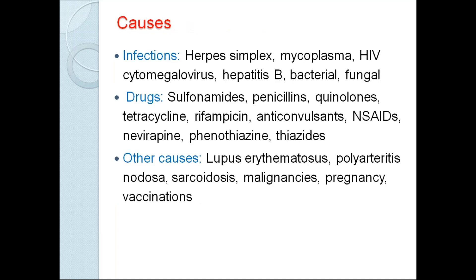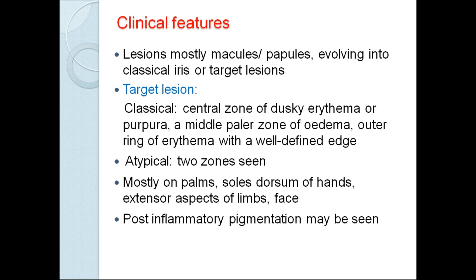Causes of erythema multiforme: most common are infections like recurrent herpes simplex, mycoplasma, HIV, cytomegalovirus, or hepatitis B. Drugs like penicillins, quinolones, tetracyclines, anticonvulsants, antacids, and rifampicin are very common. Other causes are lupus erythematosus, polyarteritis nodosa, sarcoidosis, pregnancy, vaccinations, and malignancies. Lesions are mostly macules or papules evolving into classic targetoid lesions. The classical target lesion has a central zone of dusky erythema or purpura, a middle zone that is pale due to edema, and an outer ring of erythema — a well-defined lesion.